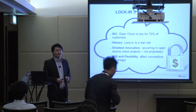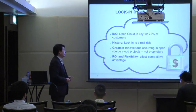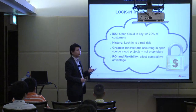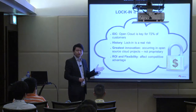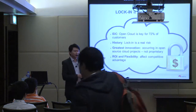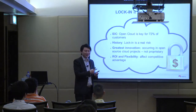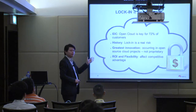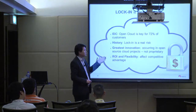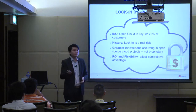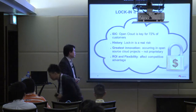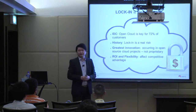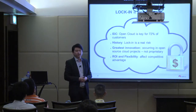One thing you need to consider is the lock-in issue. Gartner and IDC already point out that the major concern about the cloud for customers is vendor lock-in. It is very true when you review IT history — you've had a lot of lock-in from VMware and Oracle. Another point: the greatest innovation in the cloud right now comes from the open source world, like OpenStack, and not from proprietary vendors. So you need to think more seriously about how you choose the cloud, because it affects your company's competitiveness in the coming 10 years.